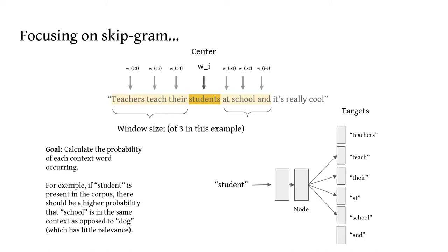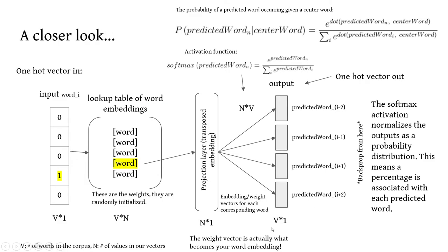So now I'd like to really focus in on the SkipGram model. And I'll really be digging into the technicalities of how it works. So given this corpus here, the SkipGram model, what it does is it iteratively looks through each word within a certain window size. And the window size is actually a hyperparameter. It is set to 3 in this case. And what that means is that it analyzes three words in front of the center word and three words after or behind the center word. And the goal is to calculate the probability of each of these context words occurring given that center word. So for example, if student is present in the corpus, there should be a higher probability that school is in the same context word as opposed to dog, which has less relevance. And here this is another sort of overview of what the SkipGram model does. You input student, it goes through a few layers, and it outputs the probabilities of certain words occurring.